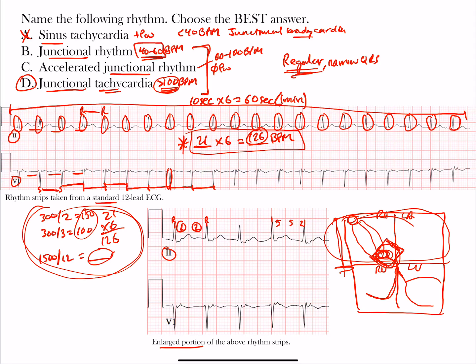Regular narrow QRS complexes, no P waves preceding, and differentiated by rate. Because the rhythm starts from the AV junction, it goes down to the ventricles but also sometimes goes backwards.